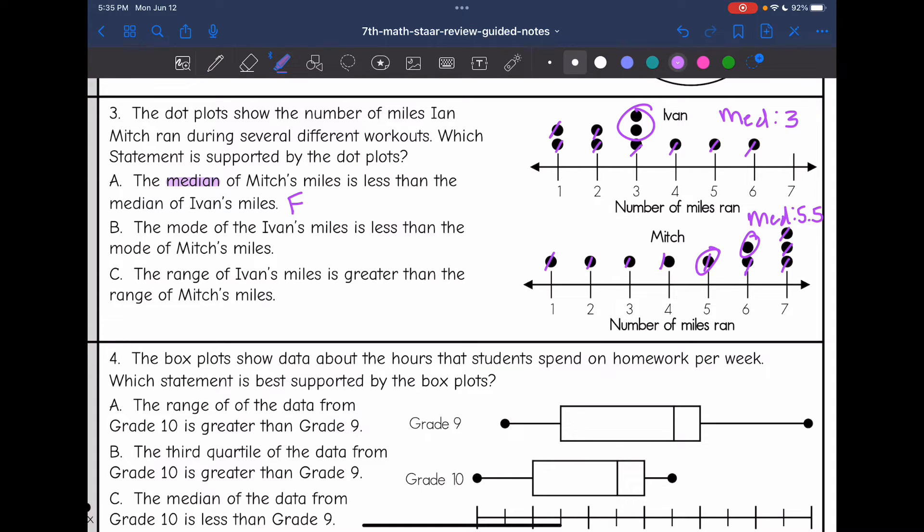B says the mode of Ivan's miles is less than the mode of Mitch's miles. Remember, the mode is the number that repeats most often. So Ivan had a mode of three. And it looks like Mitch had a mode of seven. So B said the mode of Ivan's miles, which was three, is less than the mode of Mitch's miles, which is seven. Which that is true.